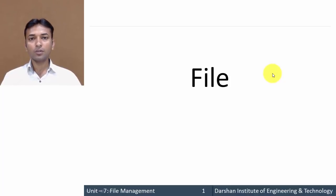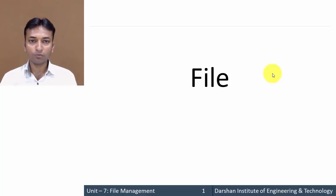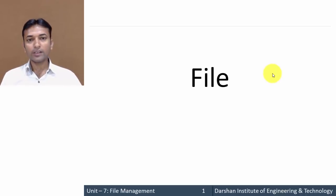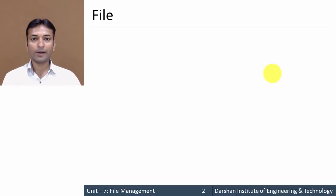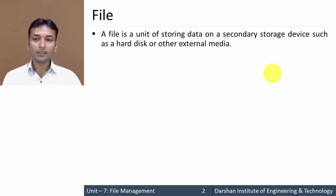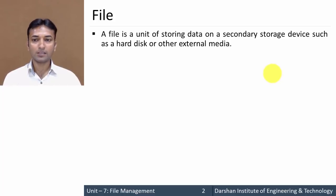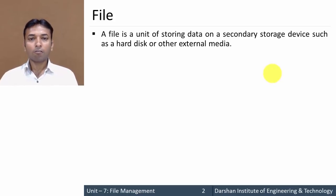In this video we will learn about basic concepts of files — what is a file, the different attributes of a file, and the different types of operations that can be performed on a file. A file is nothing but a unit of storing data on a secondary storage device such as a hard disk or some other external media.